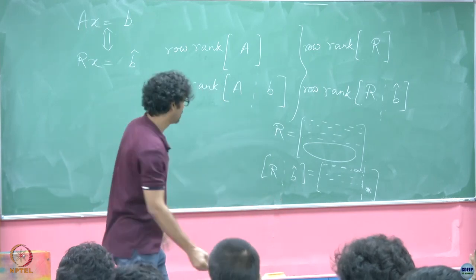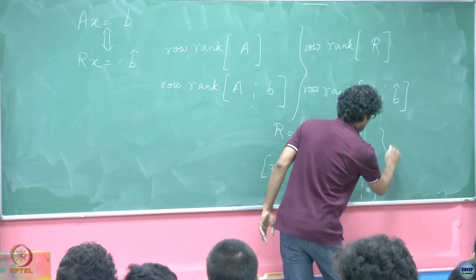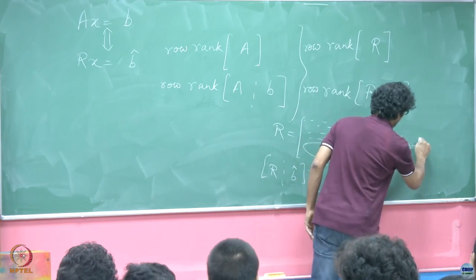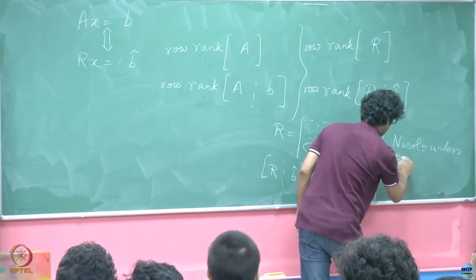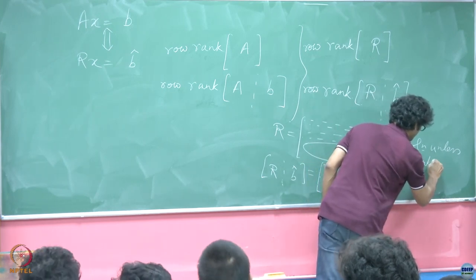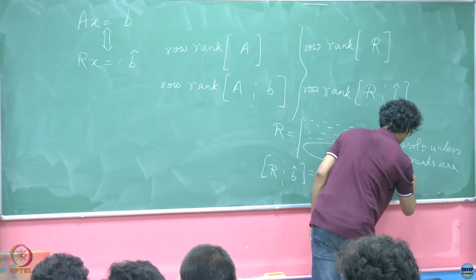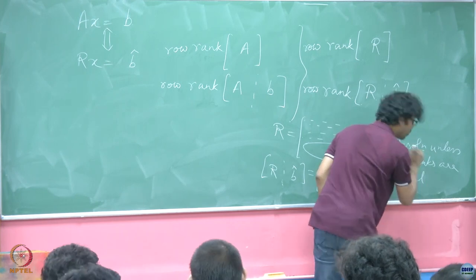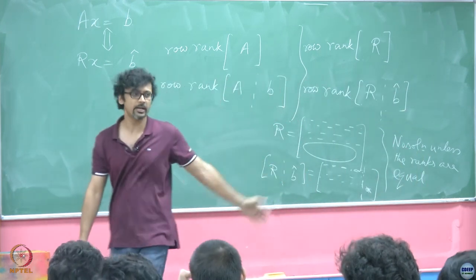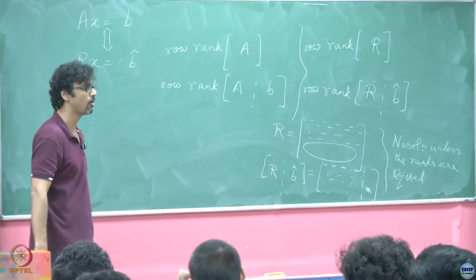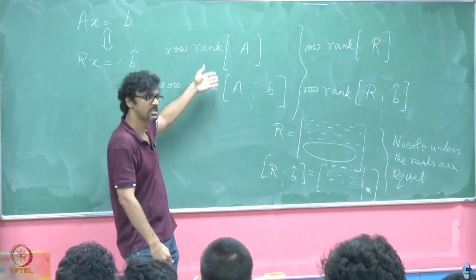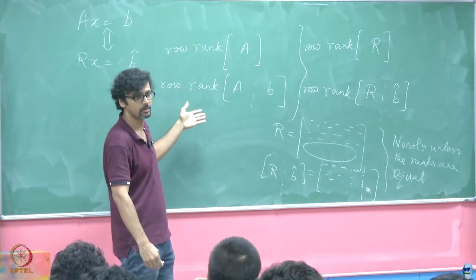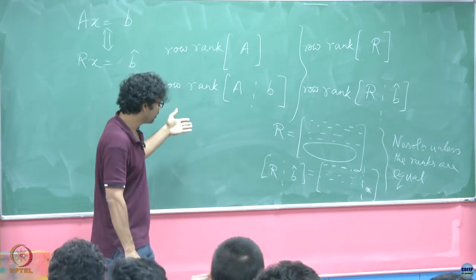But that essentially means that you are asking for a condition where 0 times all the x's is equal to something non-zero. You can never meet such a condition. So therefore, of course, no solution can exist unless the ranks are equal. It is very transparent once you look at the row reduced echelon form.